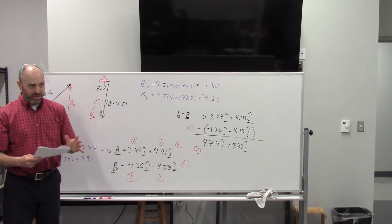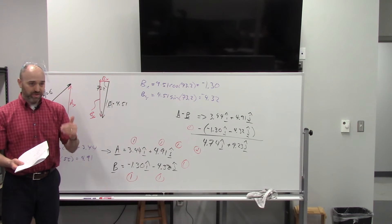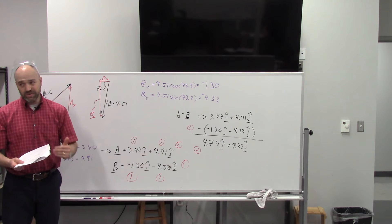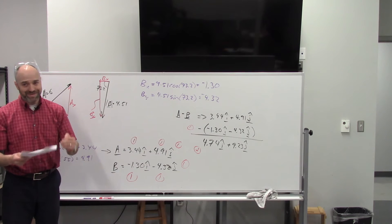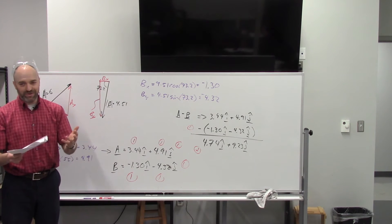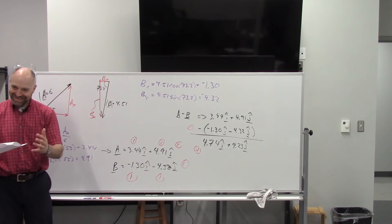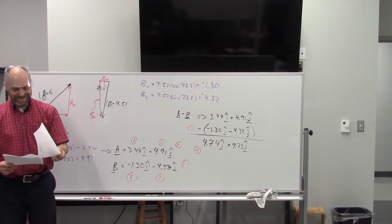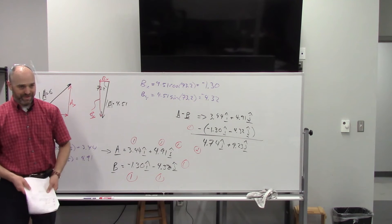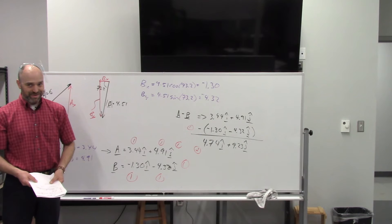î and ĵ notation is a weird way to write things because you're not used to it, but once you get used to it, it's so much easier and your life becomes so much happier. You didn't know that vector notation would make you happy, but it does.